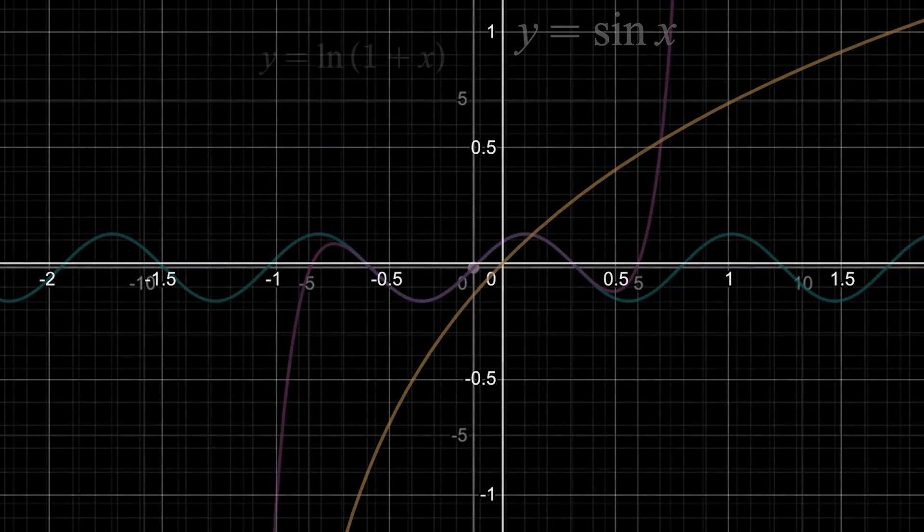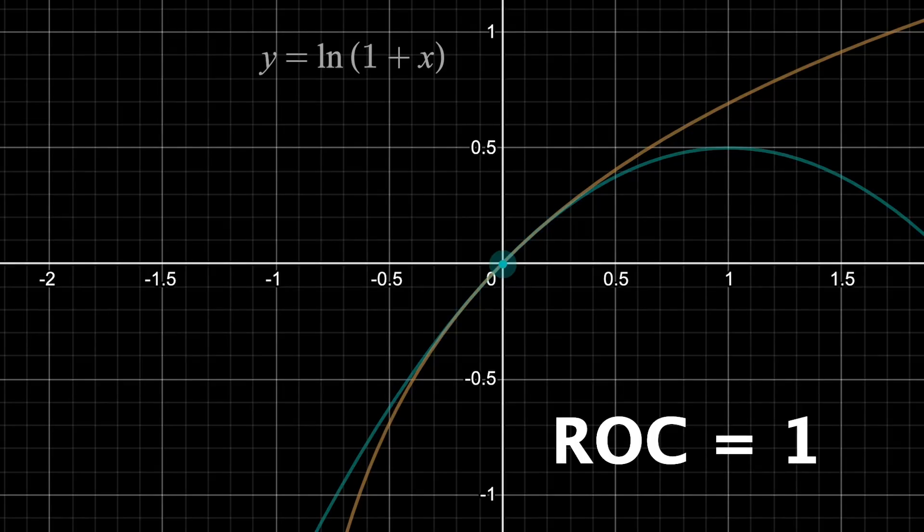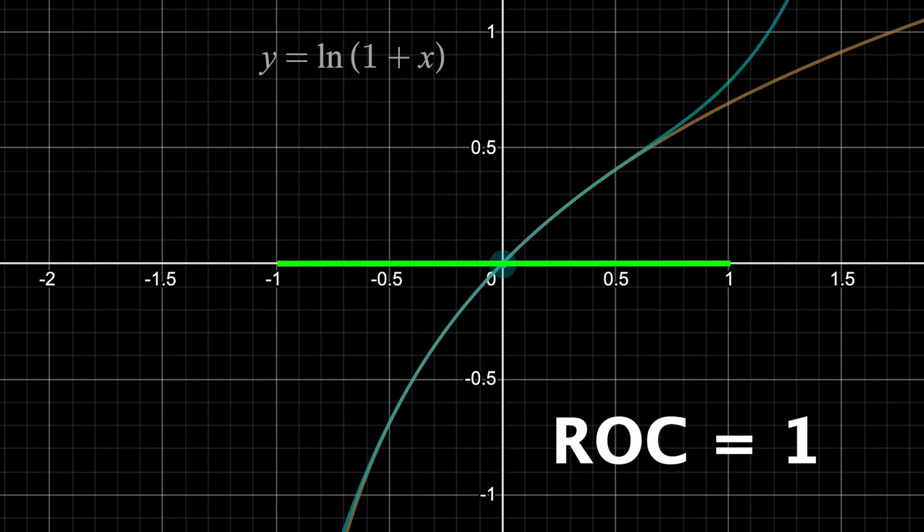But for the function natural log of 1 plus x, the radius of convergence is 1, when the series is centered at x equals 0. So as you include more and more terms, everything outside that interval from negative 1 to 1 just diverges. And negative 1 does as well.